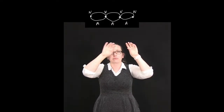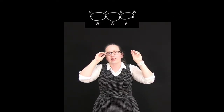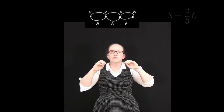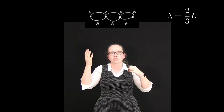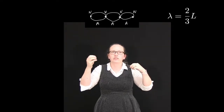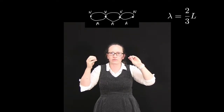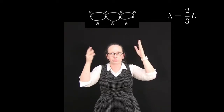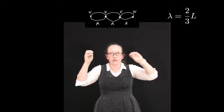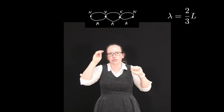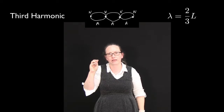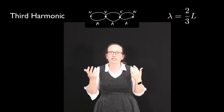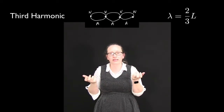We could also think about having three loops on the piece of string. In that case, three half-wavelengths equals L, so the wavelength of this standing wave is equal to two times the length divided by three. That's known as the third harmonic.